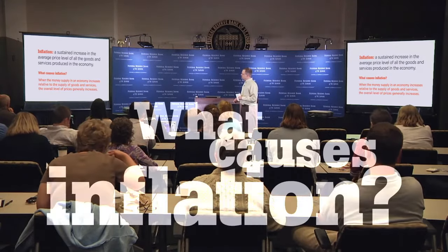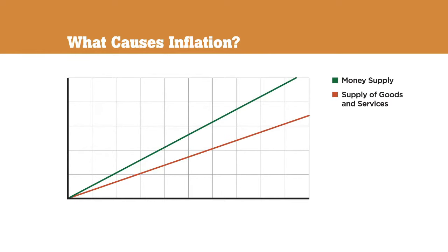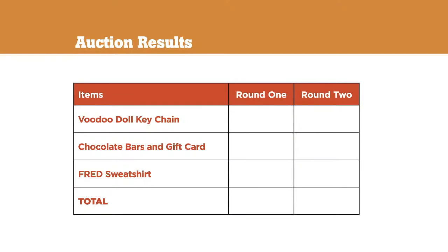What causes inflation? Inflation is caused when the money supply in an economy grows at a faster rate than an economy's ability to produce goods and services. In our auction economy, the production of goods and services was unchanged, but the money supply grew from round one to round two. Because the money supply grew and the output of goods and services did not grow, our economy experienced inflation.